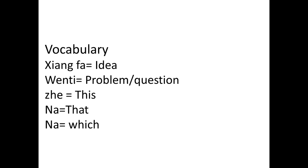The second vocabulary word is 问题 (wèntí), which means problem or question — any problem or any question. For example, if I ask you a question in class, I can say: 你们有问题吗 (nǐmen yǒu wèntí ma)? Do you people have any question or any problem? The third word is 这个 (zhège), meaning 'this.' This is my friend, this is my father, this is my mother — you say 这个 (zhège).